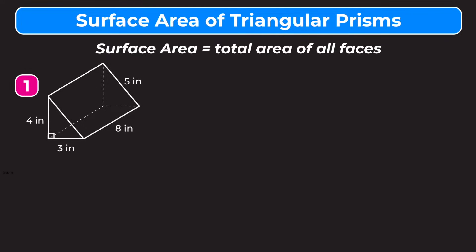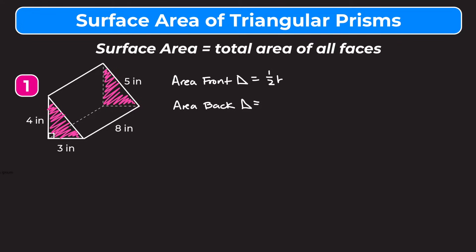Let's get started on this example. I'm going to find the area of these two right triangles first — I'll shade them in. So I want to find the area of this front face and this back triangular face. Those are going to have the same area. To find the area of a triangle, we're going to do one-half times the base times the height.